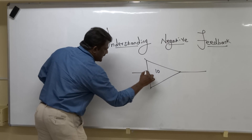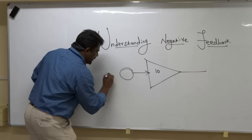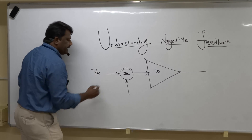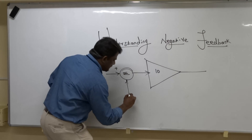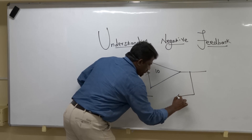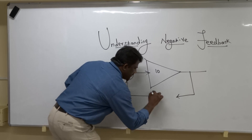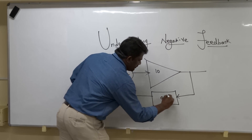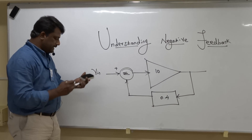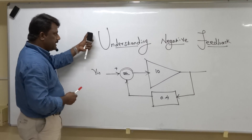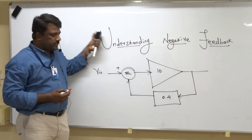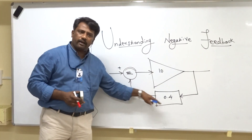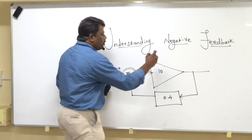To keep it simple, let us take an amplifier with an open-loop gain of 10 and make it a closed-loop by adding a summing point. At the summing point the gain is labeled, and we take the feedback signal from the output through the feedback factor beta, which I will set equal to 0.4.